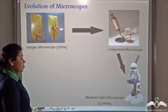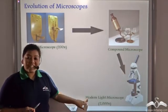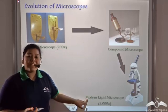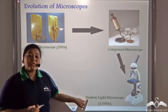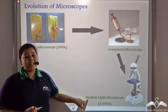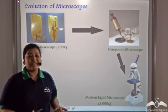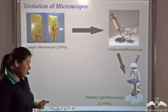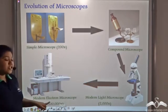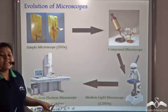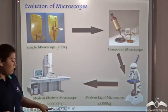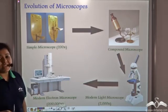Next came the modern light microscope that had a magnification power of 2000x and it helped in visualizing the cells better. And for the best magnification, one can use the modern electron microscope that has a magnification power of 200,000x.